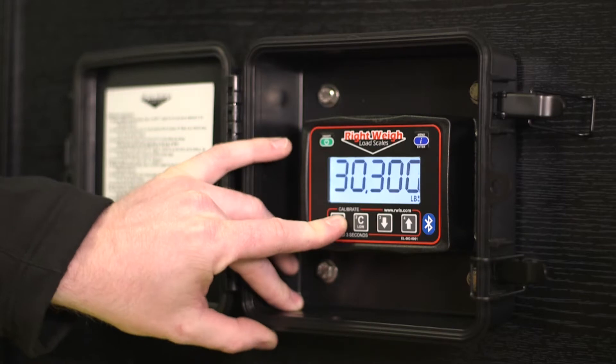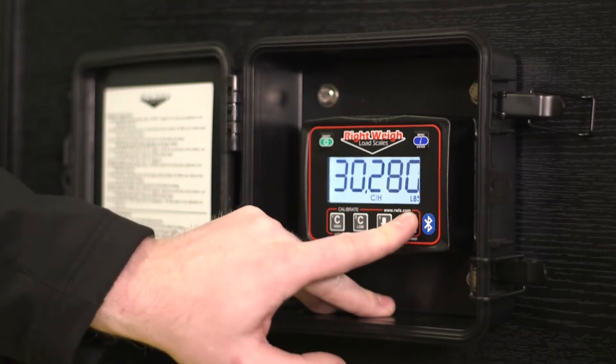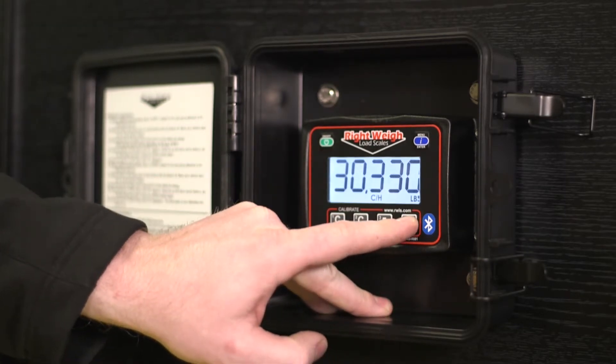So hold down cal high. And then we'll use the up arrow and we'll get it to 33,100.